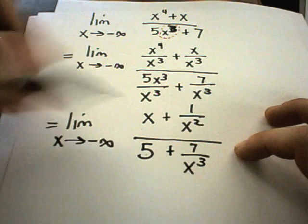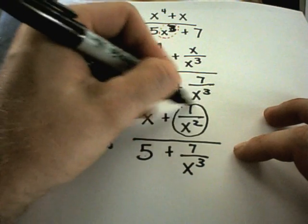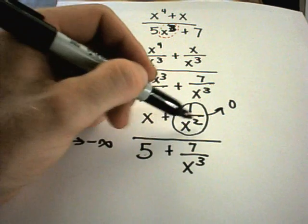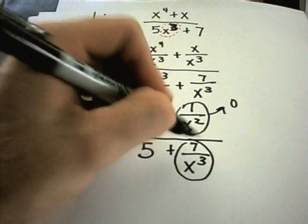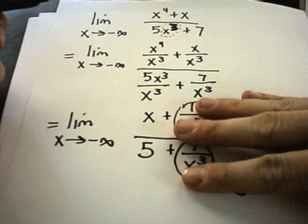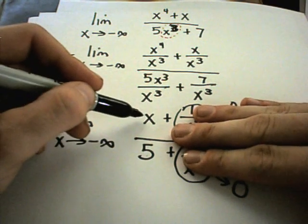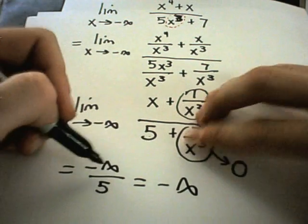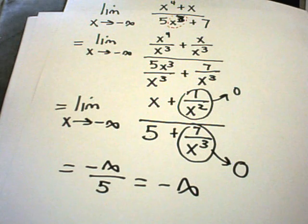Just like before, as x is going to negative infinity, notice 1 over x squared goes to 0 — whether I take a negative or positive number, I get a big number in the denominator, and 1 over a big number goes to 0. Same thing with 7 over x to the 3rd — that goes to 0. What are we really left with? These terms go to 0, and x goes to negative infinity, so we're left with negative infinity divided by 5, which is still negative infinity. If you take a big negative number and divide it by 5, it's still a big negative number. And that would be your solution.